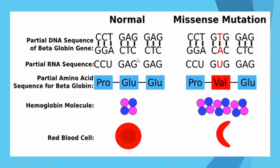We have here the normal sequence of DNA and the pairing, partial RNA sequence, and then partial amino acid sequence. We have here the hemoglobin molecule and the diagram of the red blood cells. Here we have the mutation — so instead of adenine, we have thymine, paired with adenine. So instead of glutamic acid, it becomes valine. Sickle cell anemia is a case where most of the red blood cells stiffen and become sickle-shaped in affected people. These diseased cells carry less oxygen than normal cells, and people affected by the disease will eventually die.